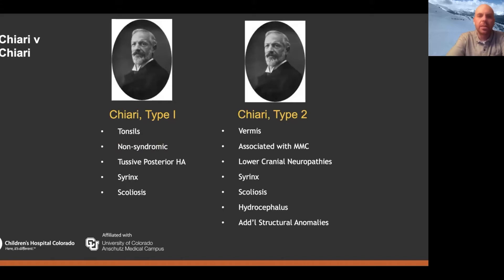Just by way of example, which you probably heard last week: Chiari 1, which is going to be much more common, happens with herniation of the cerebellar tonsils, versus Chiari 2, which is herniation of the vermis — a more centrally located anatomical structure.